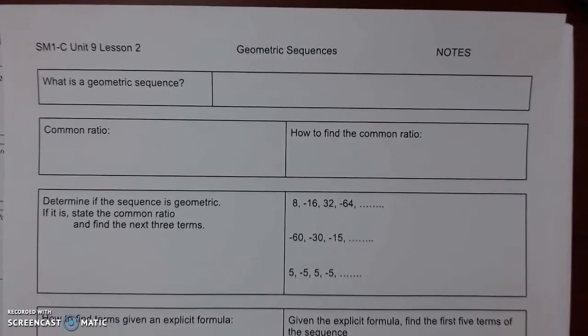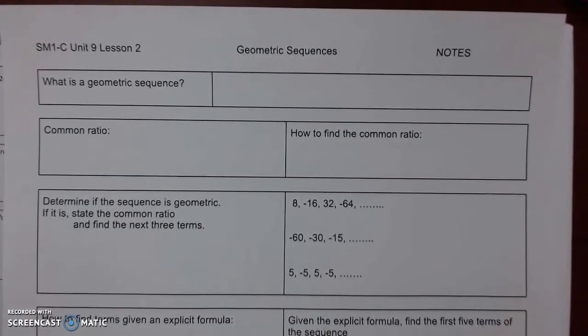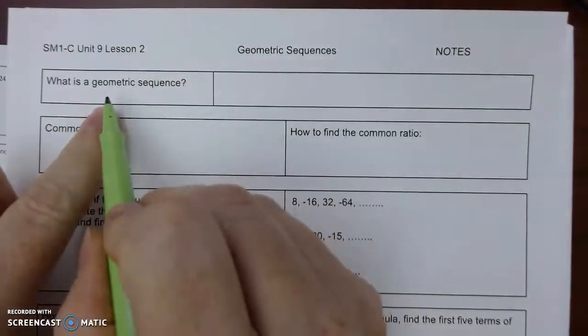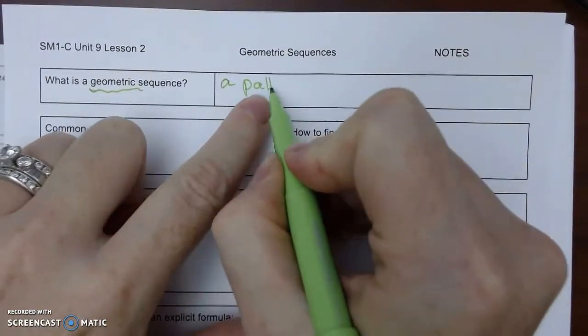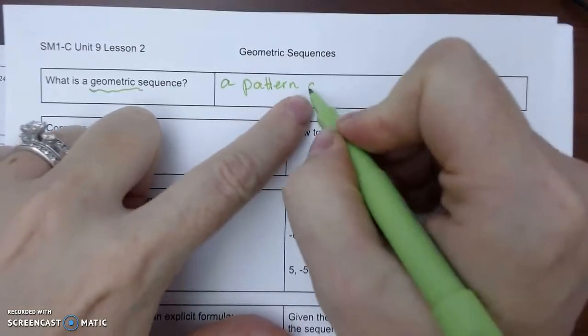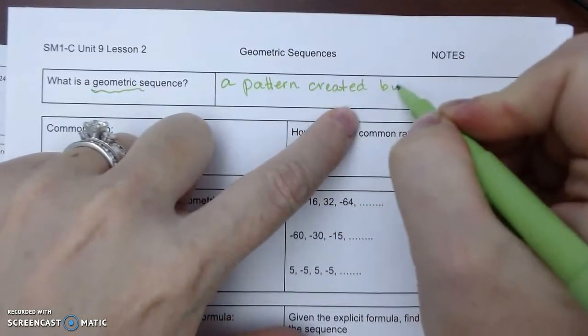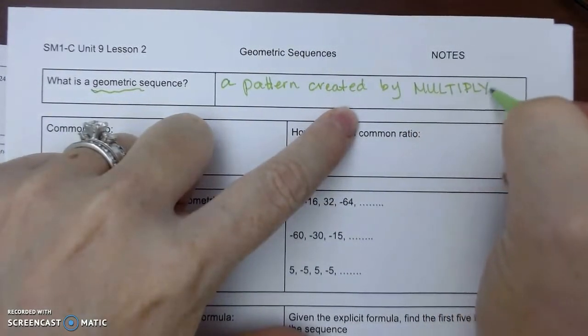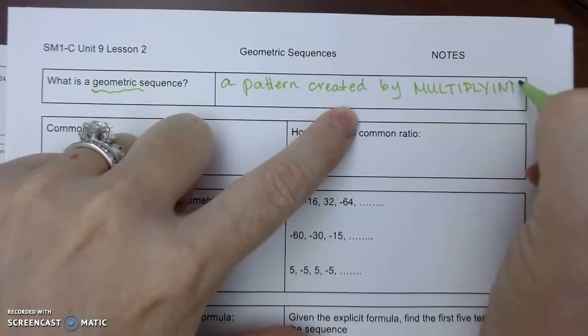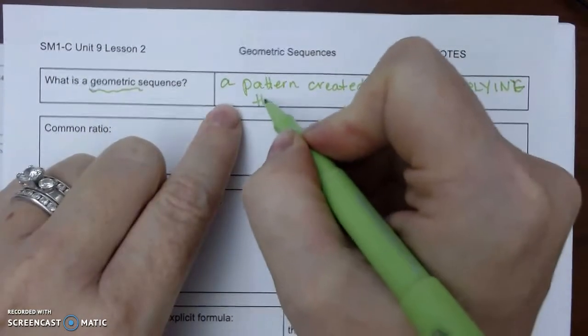Unit 9 lesson 2 talks about geometric sequences. So a sequence that is geometric is a pattern created by multiplying the same number.